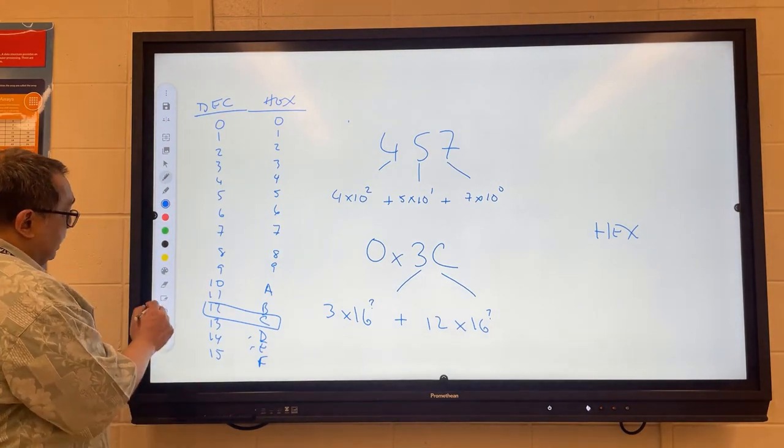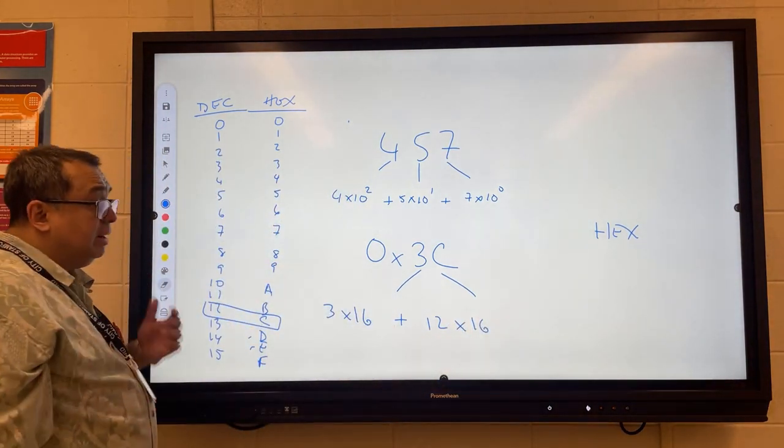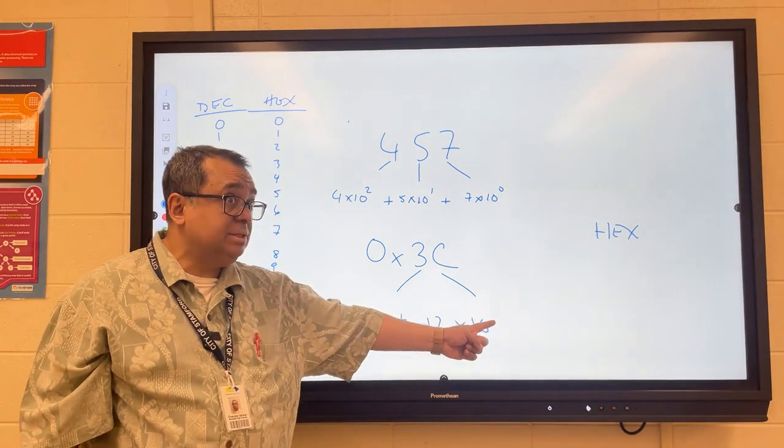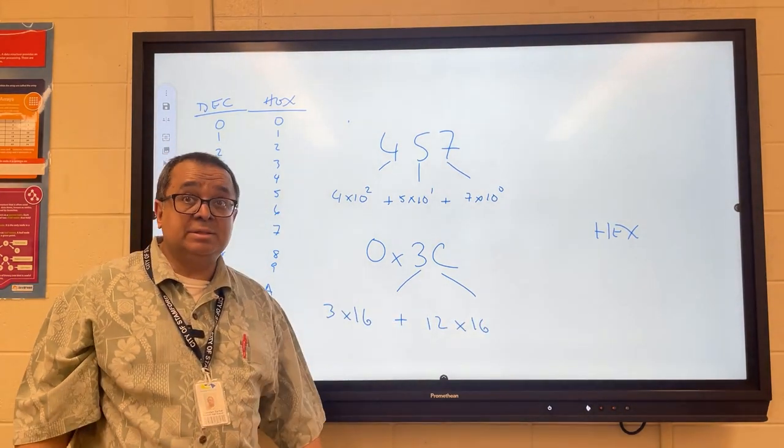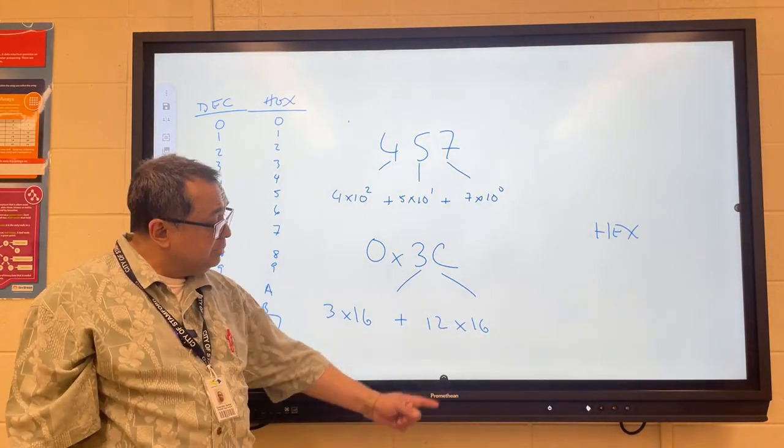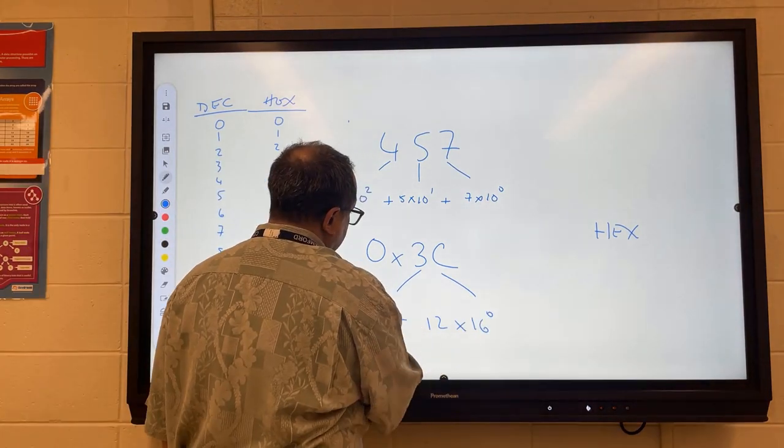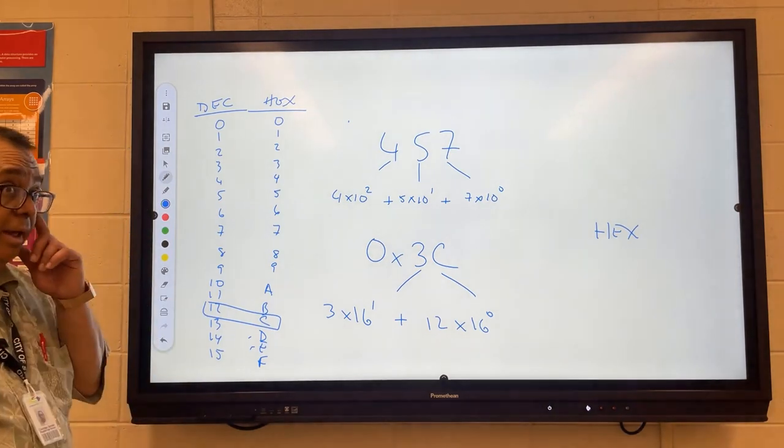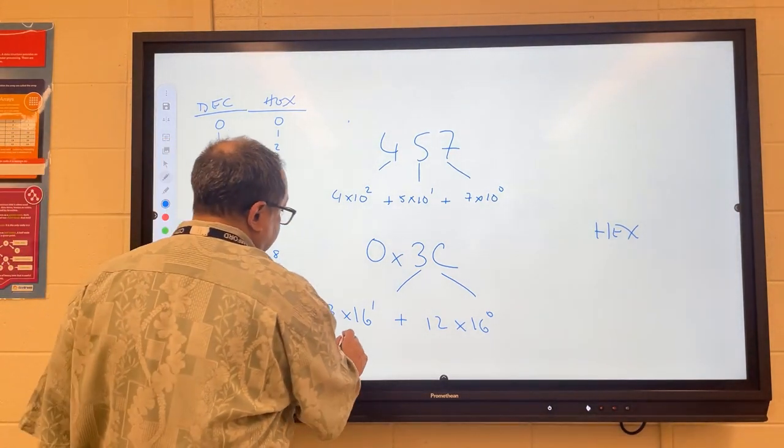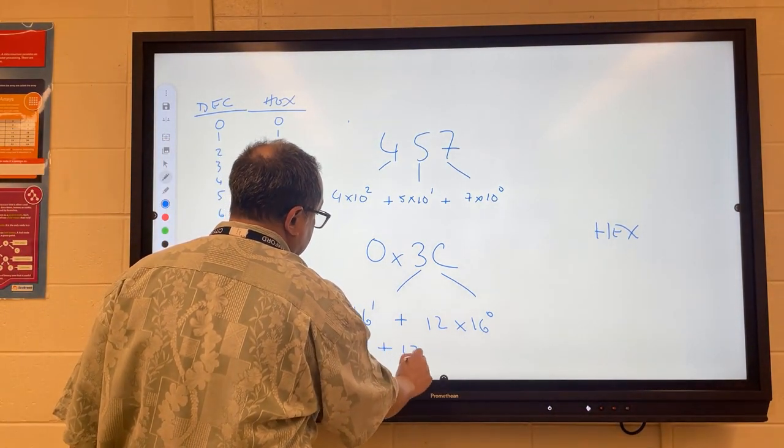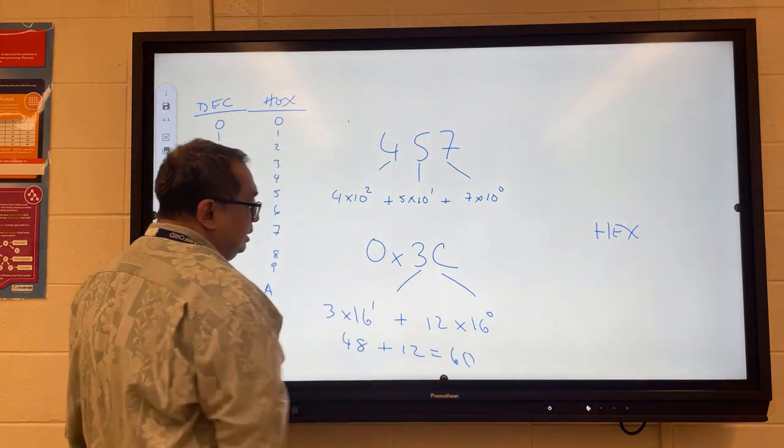So now my next question is, what exponent should I put on this 16, and what exponent should I put on that 16? Mr. Alejandro, what exponent should I put on this 16, sir? So we're going to put a 0 here, and we're going to put a 1 there. And if we do the math on this, this comes out to 48, and this comes out to 12, and so the total is 60.